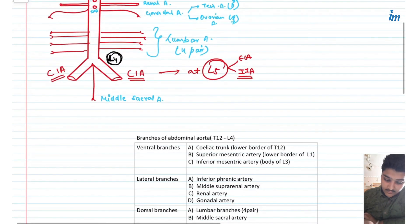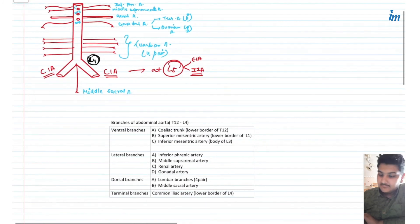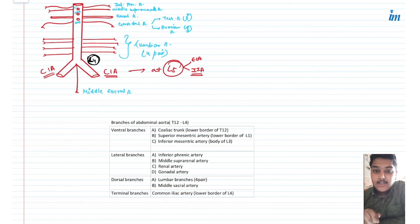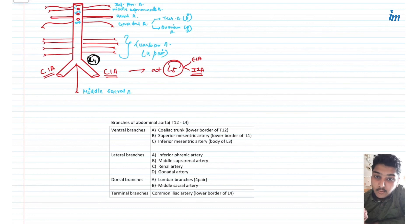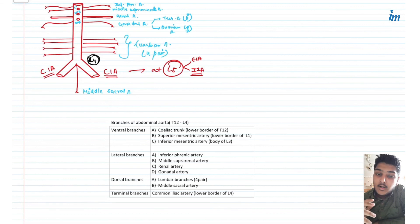So this was all about the abdominal aorta and its different branches. If you guys have any doubt related to any topic, you can comment below in the comment section. If you want to suggest topics for future videos, you can also tell us. Thank you so much guys.